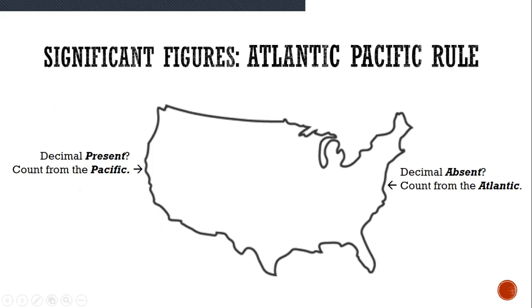There's a really simple rule to be able to count significant figures. So all of that stuff is important. It gives you the rules, but there's a really simple way to always get it correct. It's called the Atlantic Pacific rule. If the decimal is present, count from the Pacific. That means count left to right. If the decimal is absent, count from the Atlantic. That means count from right to left.